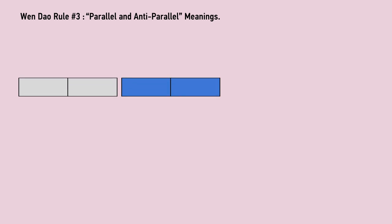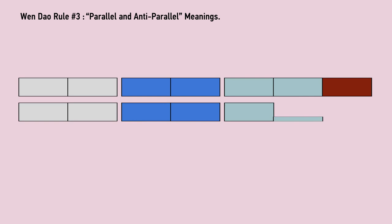Wen Dao, rule three. Parallel and anti-parallel meanings. Write the first two lines so that the words in each position echo the meaning of the words above and below. Dark night, dim stars.